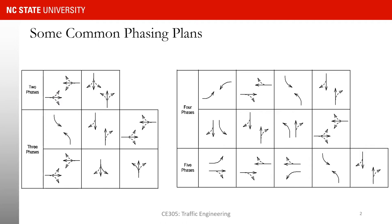One of the things I want to show you is this part of the phase plan. You can see that the phase starts with left turners and then through and right turns follow. We call this a leading phase plan — it means it starts with left turners and then goes through. We can also have a phase plan that is the opposite: it starts with through movement and then the left turns follow. That type of phase plan is called a lagging phase plan.